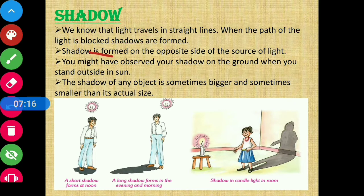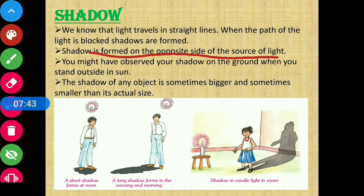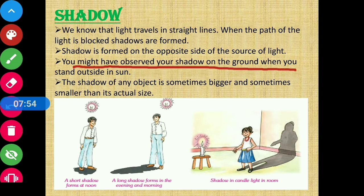Shadow is formed on the opposite side of the source of light. Now you might have observed your shadow on the ground when you stand outside in the sun. Jab hum baahar rehte hain suraj ke niche, sunlight ke niche, tab hum khud apni shadow dekh pate hain — apni parchhain ko dekh pate hain. Hum outside, kisi bhi light source ke niche rehte hain, to apni khud ki parchhain bhi dekh pate hain.